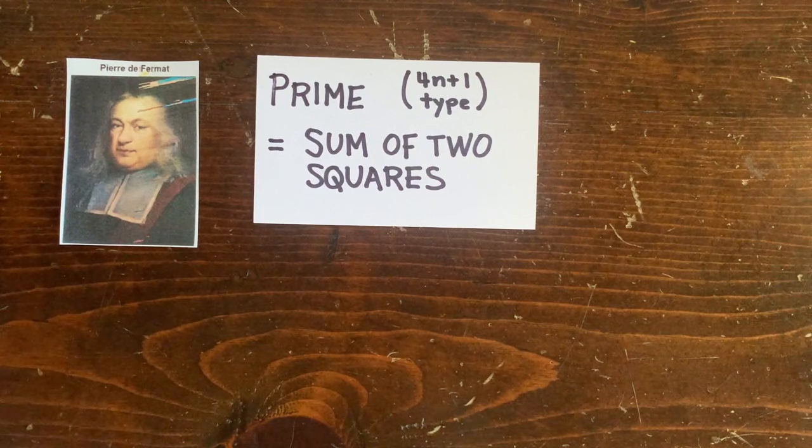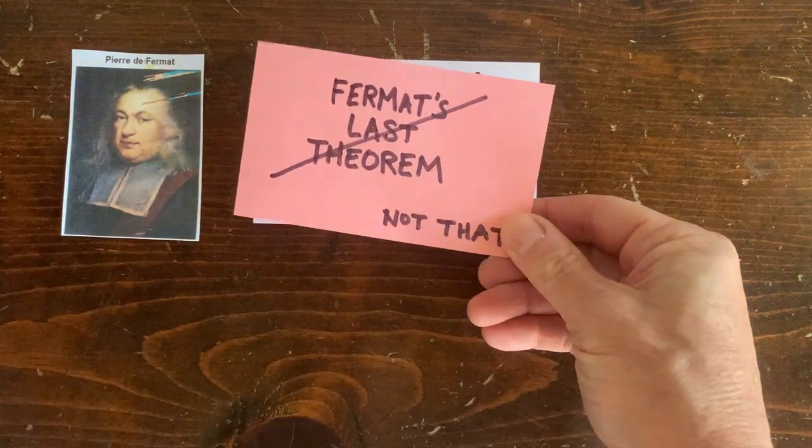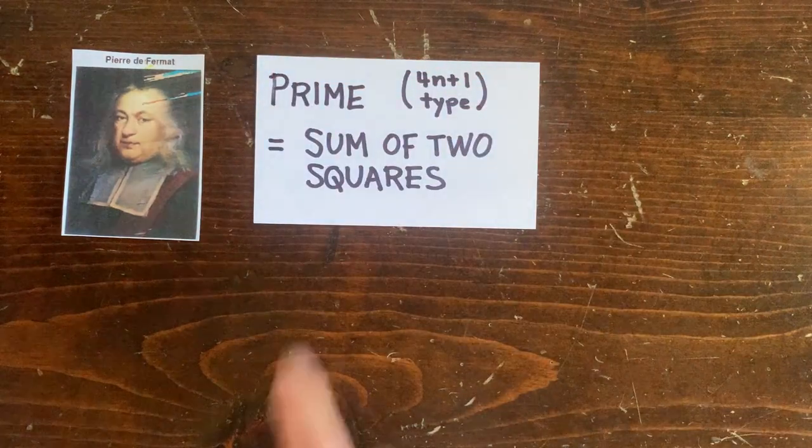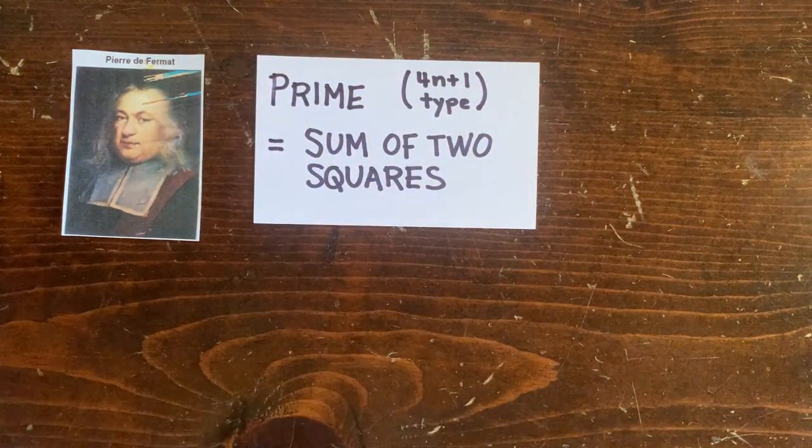Greetings. Welcome back. This time I want to look at an old theorem of Fermat's, namely that any prime of the form 4n plus 1 can be written as the sum of two squares.